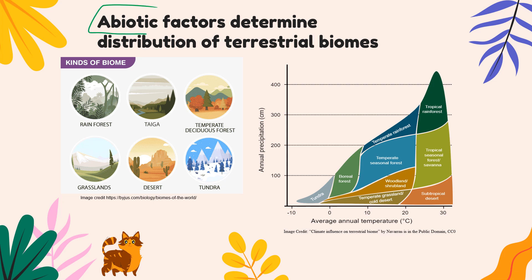We're focusing on abiotic factors. 'A' means without and 'biome' means life, so these are the non-living factors that determine the distribution of terrestrial, land-based biomes. These abiotic factors actually determine what kind of biome can exist in different locations across the planet, and they also influence what adaptations evolve in the organisms in those biomes. The two most important abiotic factors are probably precipitation and temperature.